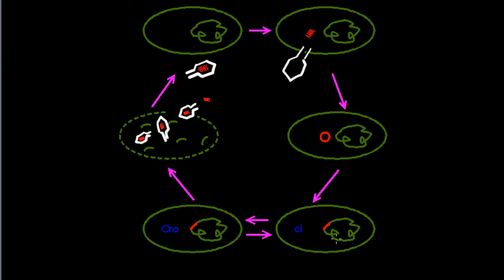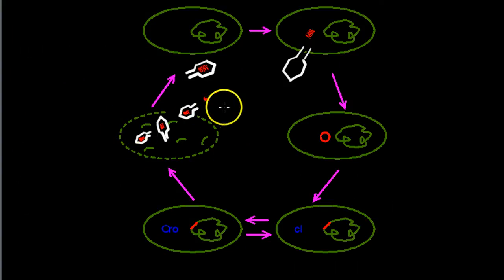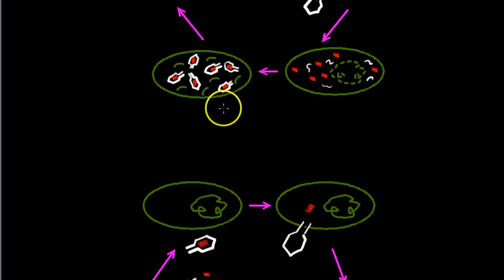The phage remains in the lysogenic phase if the CI repressor protein is predominant. If the CRO protein becomes predominant, the lambda phage will move back into the lytic phase of replication, as we described earlier.